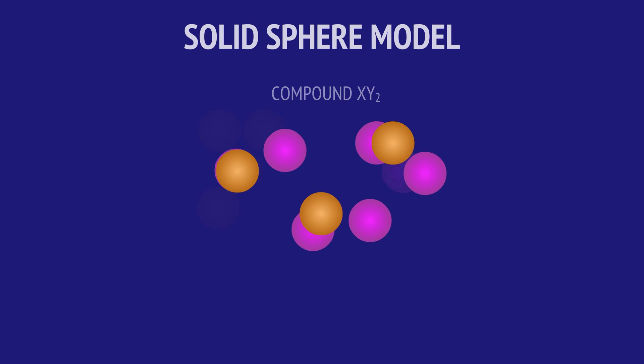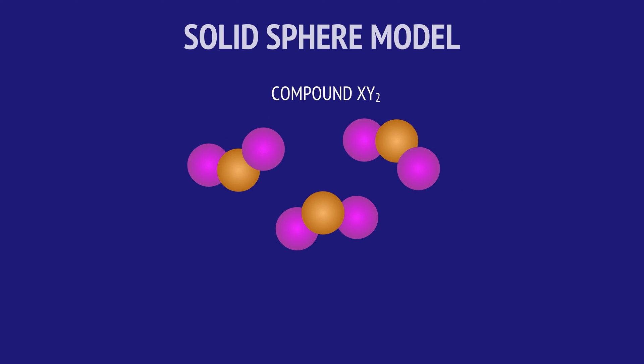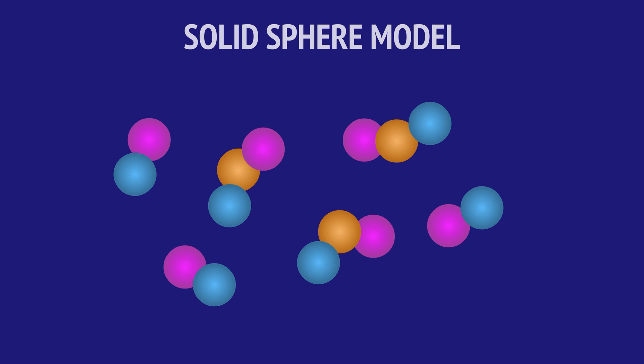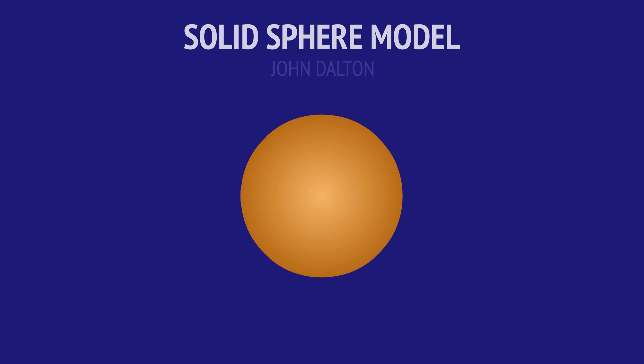He also proposed that different atoms combine in fixed ratios to give compounds, and that in chemical reactions the atoms of these compounds are separated and recombined to form new compounds.